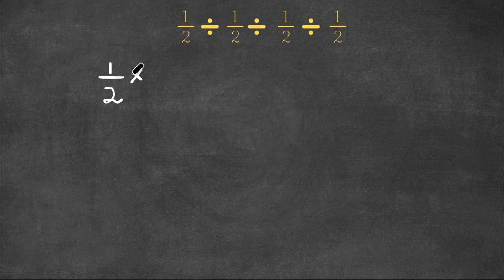So 1 half, this is kept the same, then we flip the division sign to a multiplication sign, then we flip the places of the numerators and the denominators. In other words, we put in the reciprocal. So 1 half, the reciprocal of 1 half would be 2 over 1.